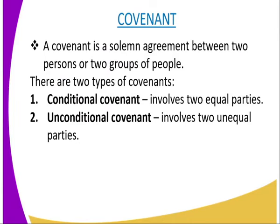Now we look at the meaning of a covenant. What is a covenant? A covenant is a solemn agreement between two persons or two groups of people. It is a solemn agreement between two persons or two groups of people.